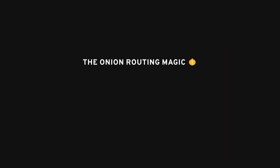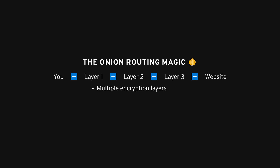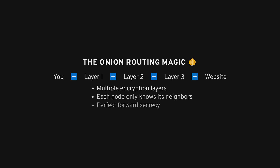Here's how it works. Instead of the usual VPN setup, where you have nodes and an exit point, onion routing uses multiple layers of encryption — hence the onion name. When you connect to an onion site, your data is routed through several nodes in the Tor network. Each node only knows the location of the previous and the next node.